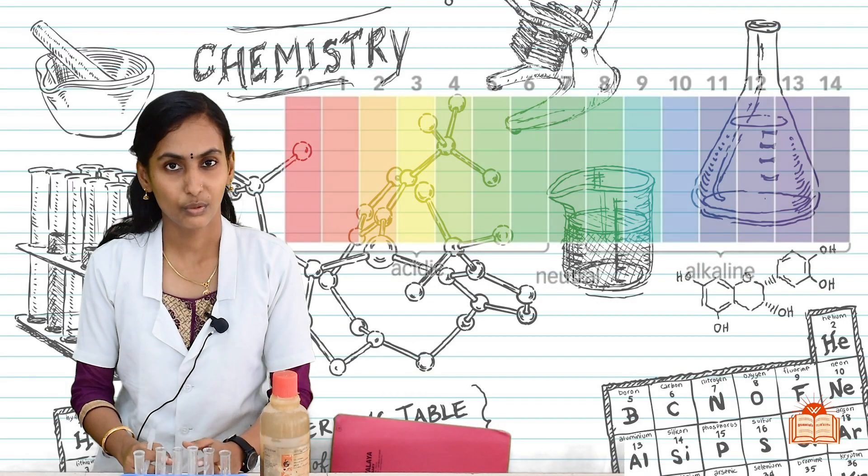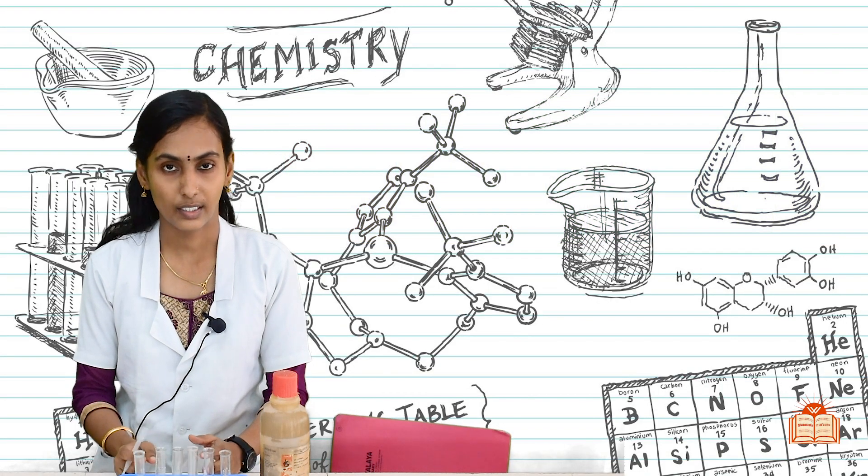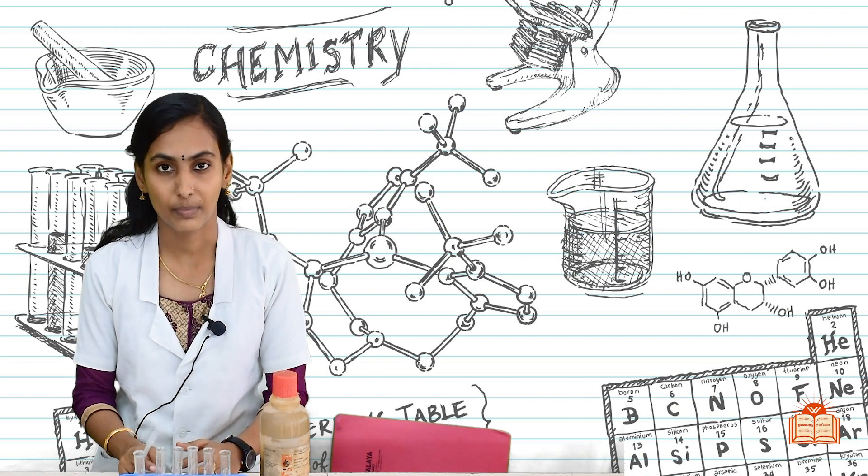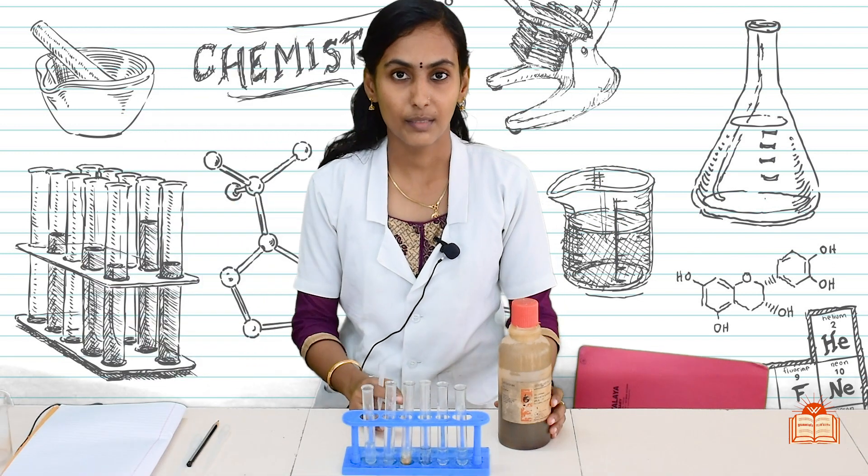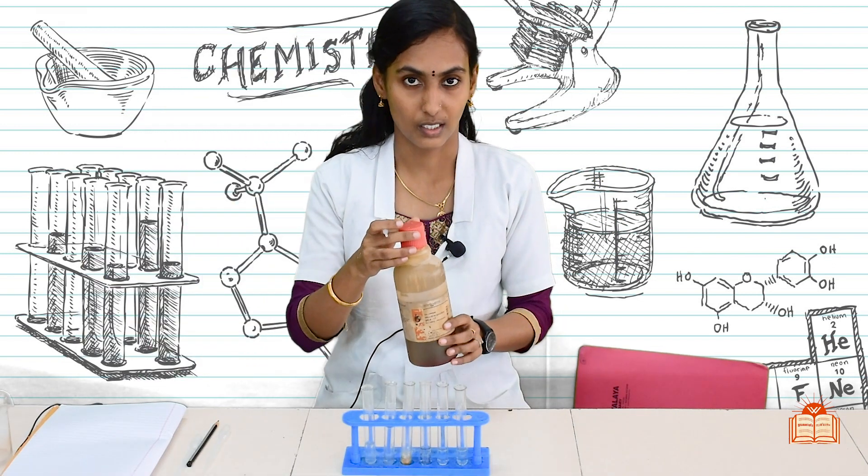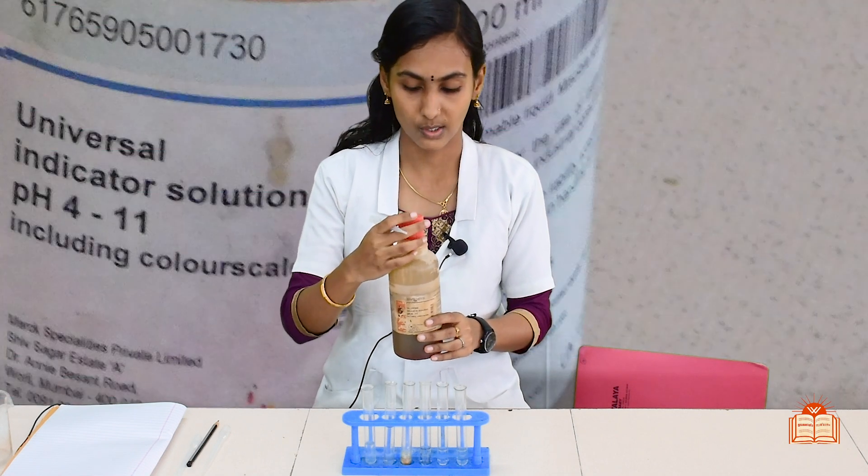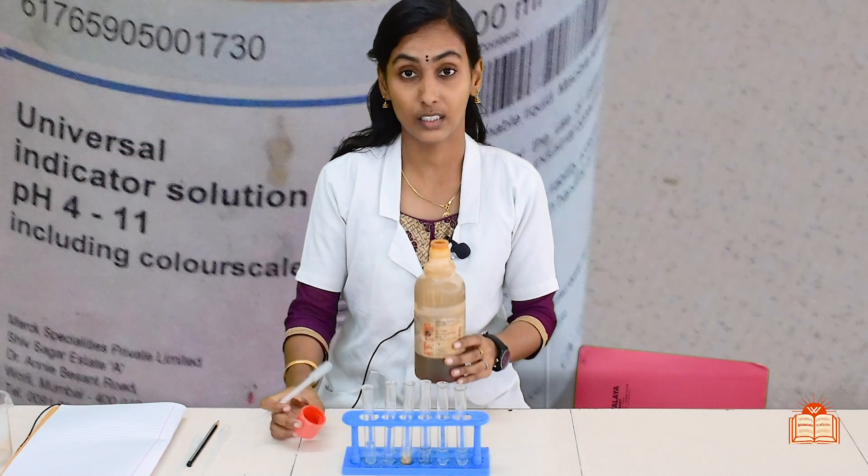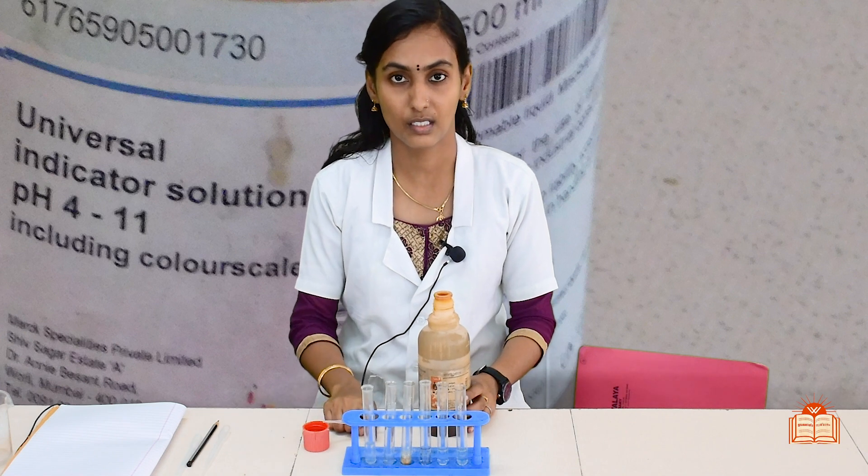Ok students, so far we have done our experiment using the pH paper. Now we will do the same experiment with universal indicator solution. This is actually a mixture of very many other chemicals, many colored substances.